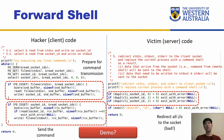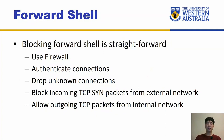The shortcoming of the forward shell is that it's quite easy to block. You can create a firewall that filters out malicious users from different places, provide authentication to connections, drop online connections, block incoming TCP SYN packets from external networks, or allow only outgoing TCP packets for internal traffic. There are quite different ways to block it. Also, as mentioned, discovering or planting a vulnerability is very difficult.